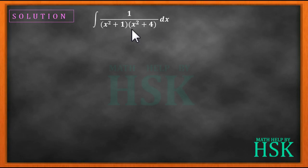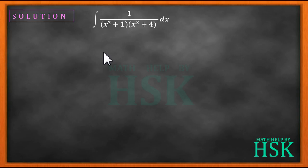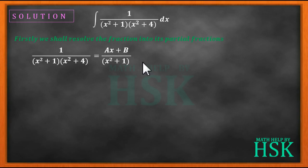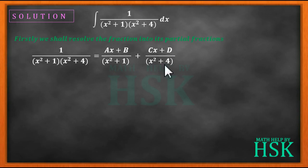This question can only be solved if we resolve this fraction into its partial fractions, and after doing that it will become a very easy problem. So to resolve into partial fractions, we take the given fraction and write it as equal to (Ax + B)/(x² + 1) plus (Cx + D)/(x² + 4).